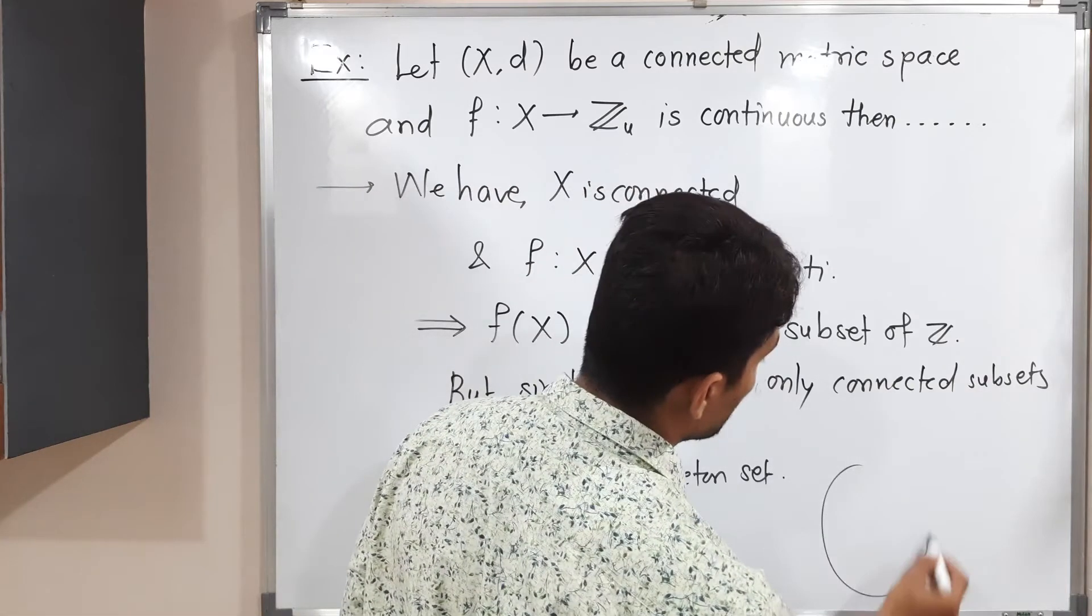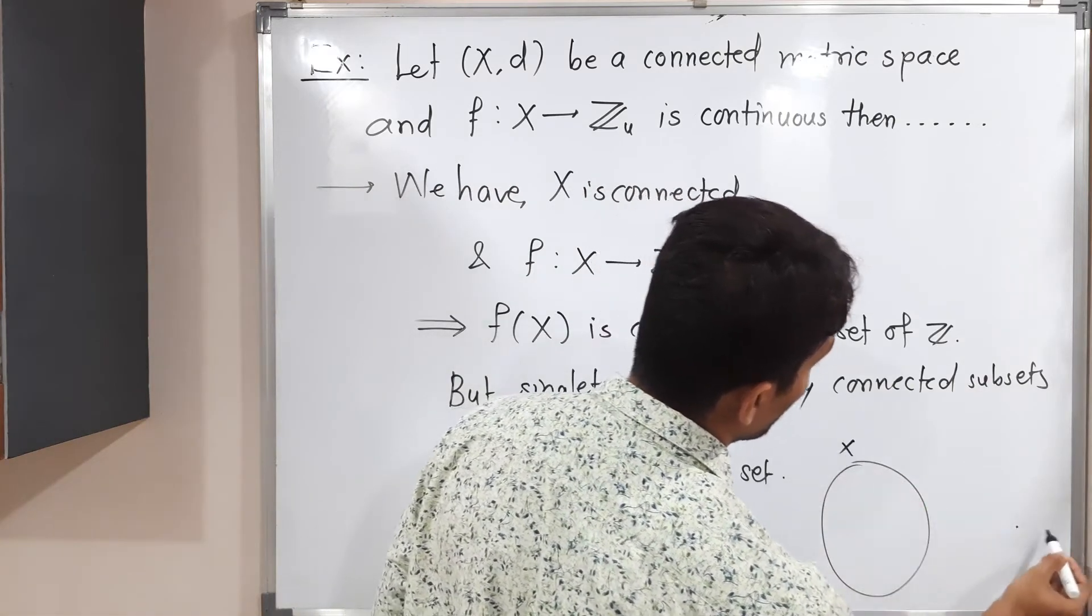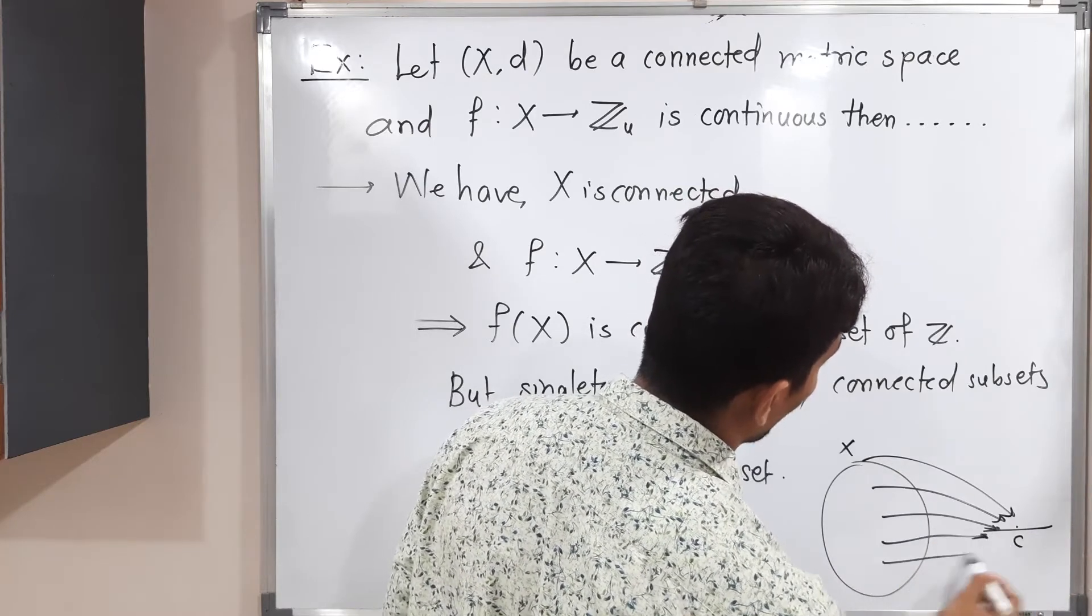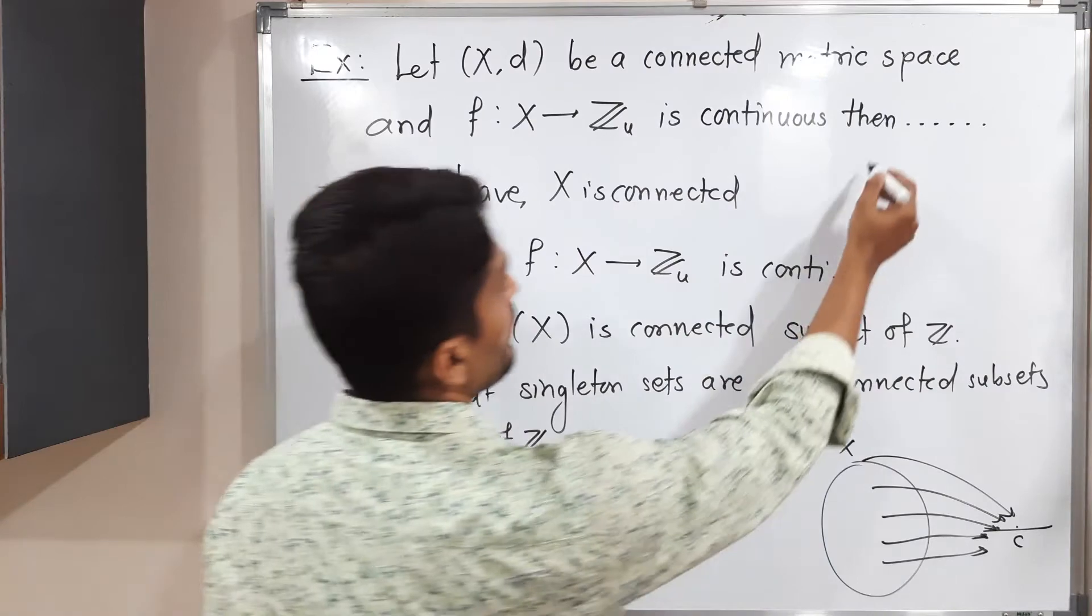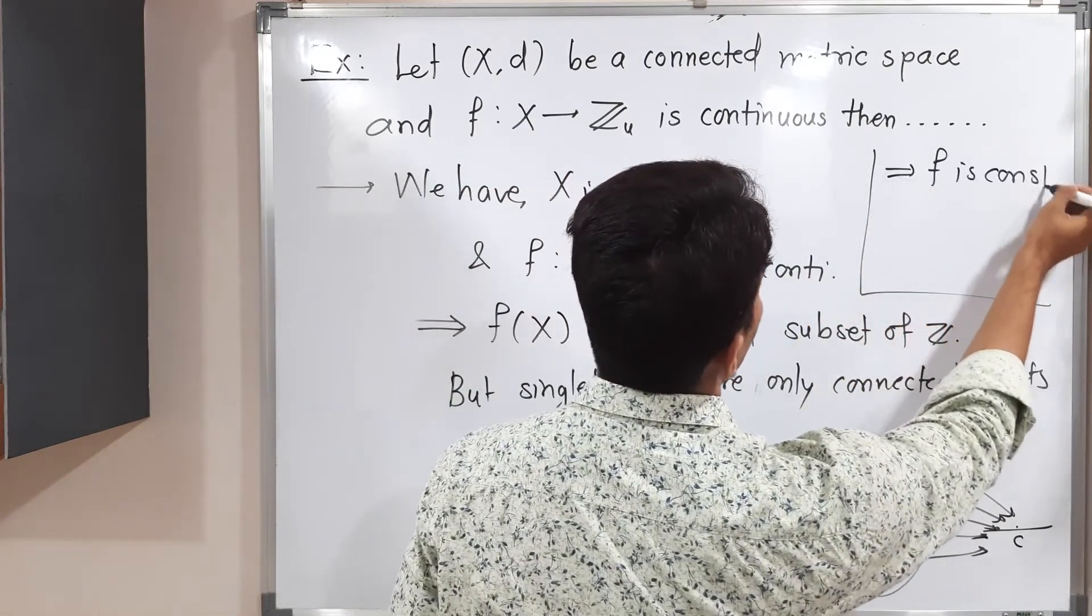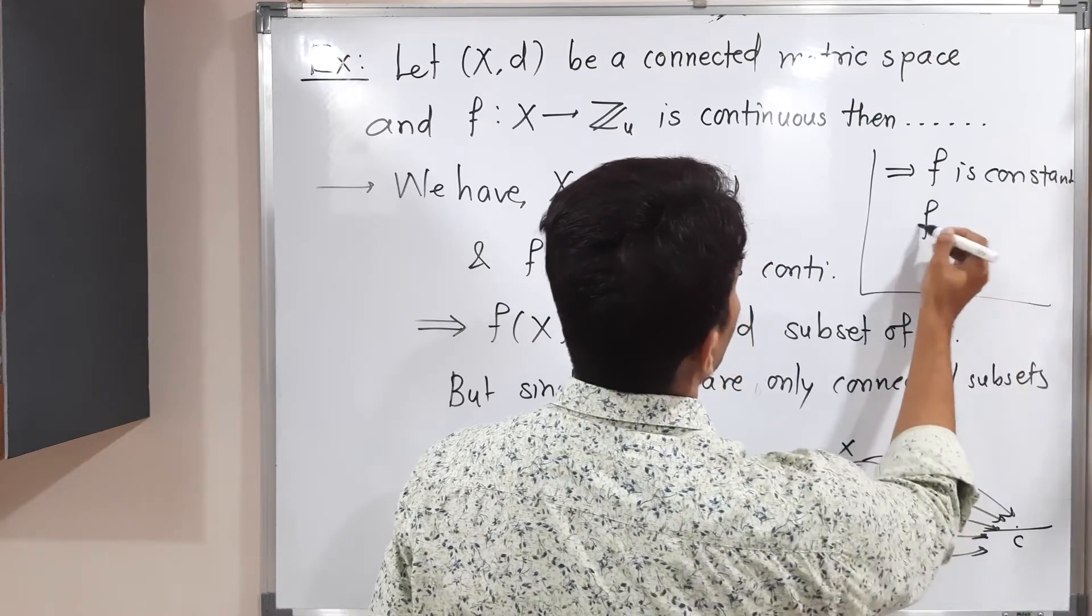Actually what is happening you can see here, X is a connected set and there is only one point c. So all elements are mapping towards c. That means all elements are moving towards c. Therefore what can we see? Therefore, f is constant function.